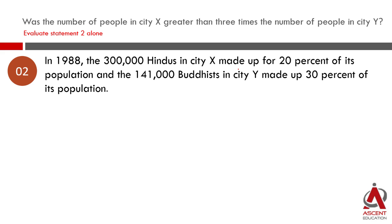Looking at only Statement 2: in 1988, the 300,000 Hindus in city X made up 20% of its population. So 20% of X equals 300,000. Since 20% is one-fifth, one-fifth of the population equals 300,000, meaning the population of city X is 5 times 300,000, which is 1,500,000 — that is, 1 million and 500,000. This is the population of city X.